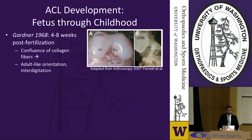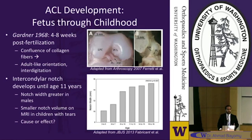In terms of the development of the ACL starting at the level of the fetus, Gardner was the first to describe the development of the knee after fertilization. At about four weeks we begin to see a confluence of collagen fibers, and by eight weeks post-fertilization the ACL fibers have oriented in an adult-like fashion. In a 20-week-old fetus you can see clearly defined anteromedial and posterolateral bundles. The intercondylar notch width plateaus at about age 11; boys have a wider notch than girls. Retrospective review of MRIs shows a smaller notch volume in patients who've sustained a tear, though correlation versus causation is unclear.